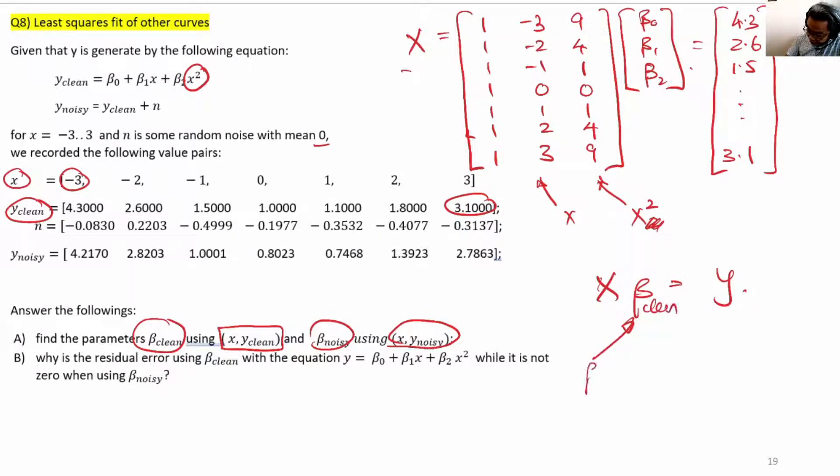We have x times β equals y, and now we can solve for β_clean because this is y_clean, this is the design matrix x, and this is β_clean.